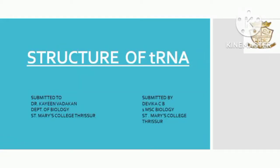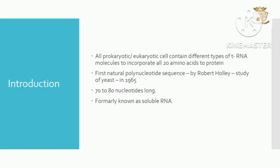Hello everyone, I am Devika, first MSc Biology. Today we are going to discuss the structure of tRNA. All prokaryotic or eukaryotic cells contain different types of tRNA molecules to incorporate all 20 amino acids into proteins. The first natural polynucleotide sequence, tRNA, was studied in yeast in 1965 by Robert Holley, who founded the structure of tRNA.